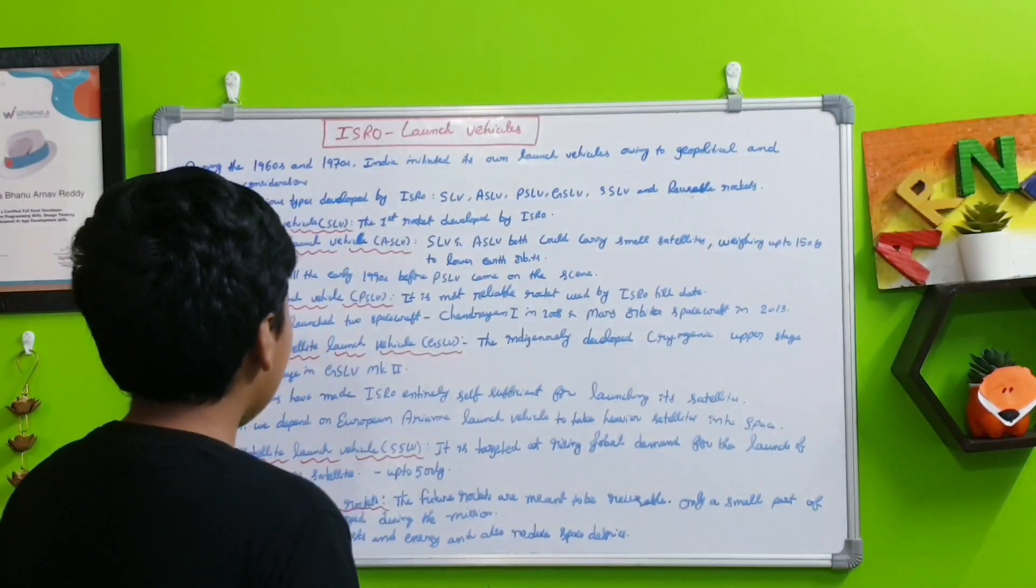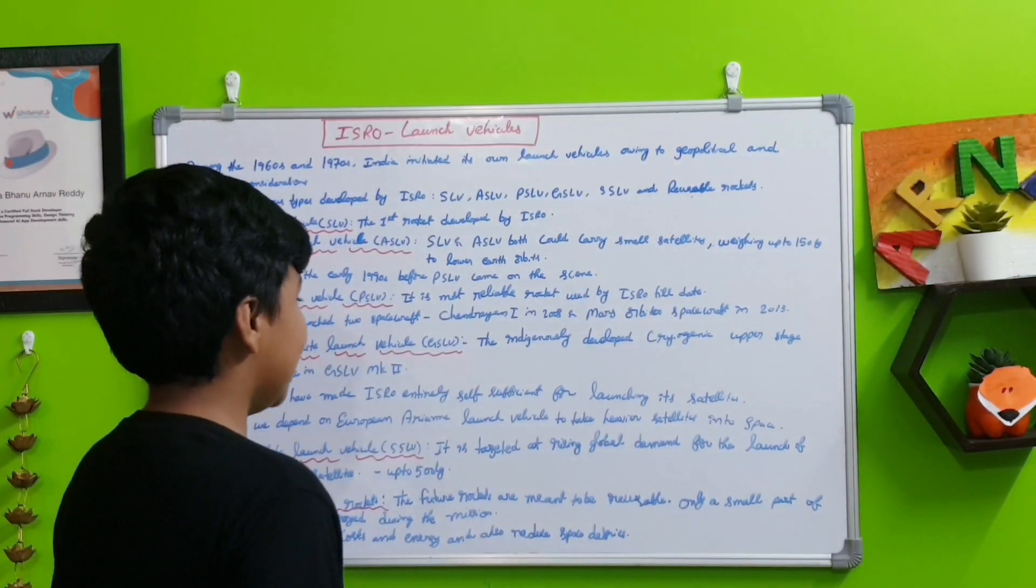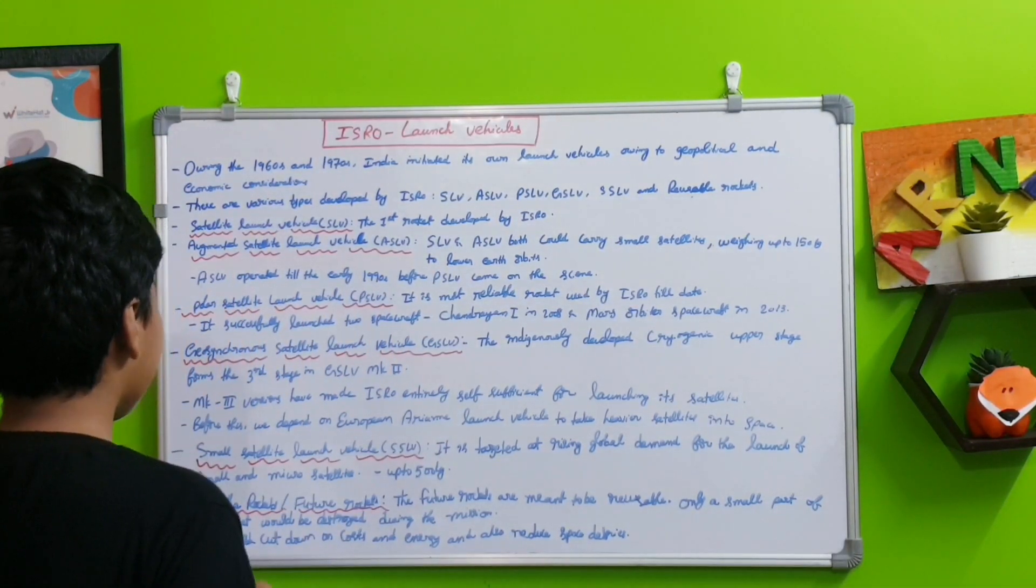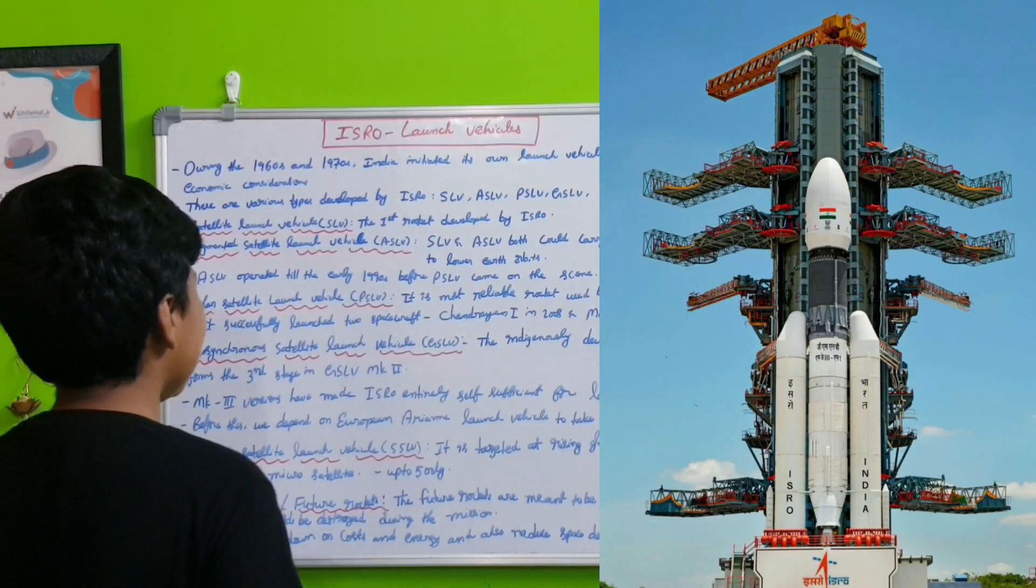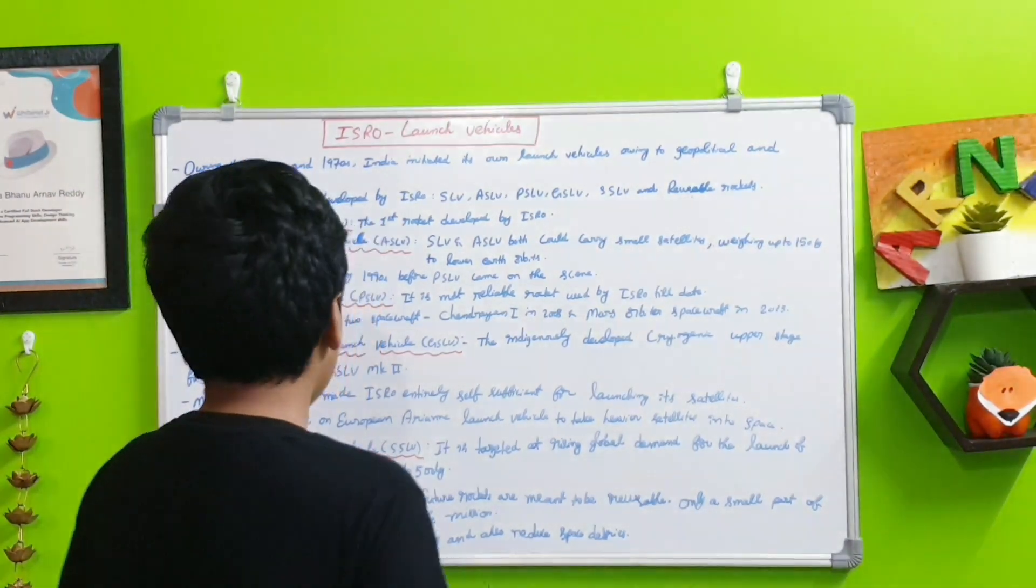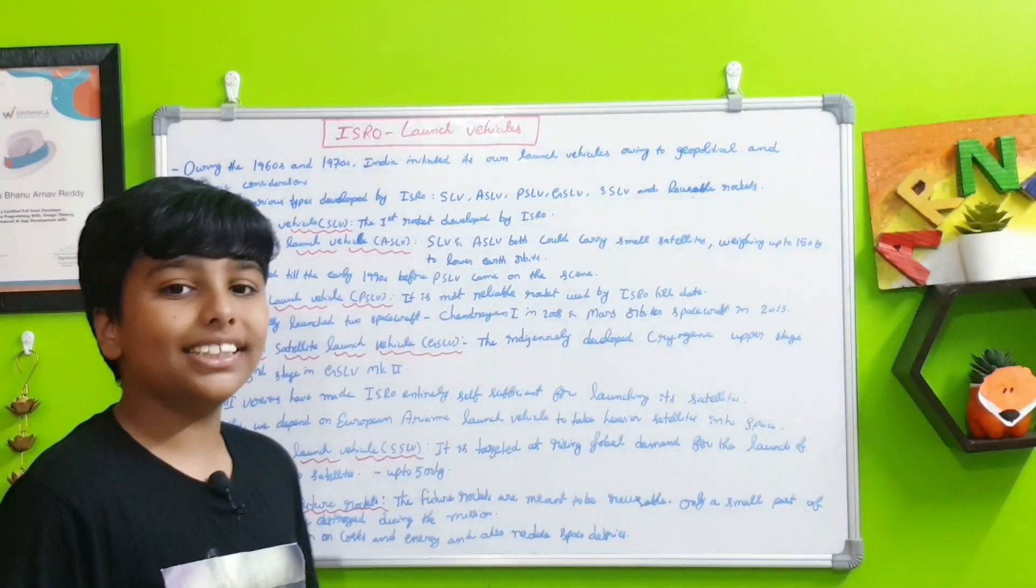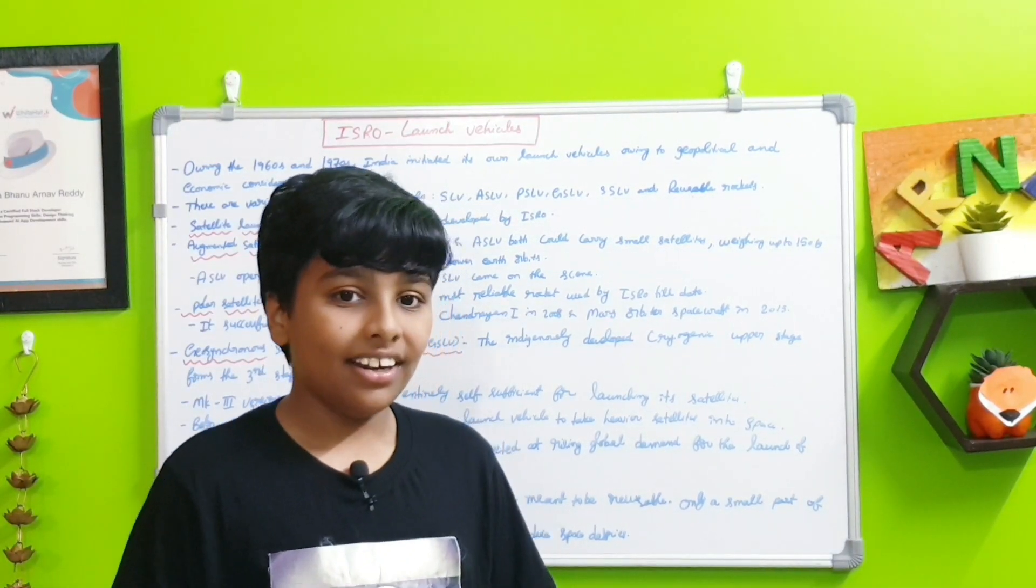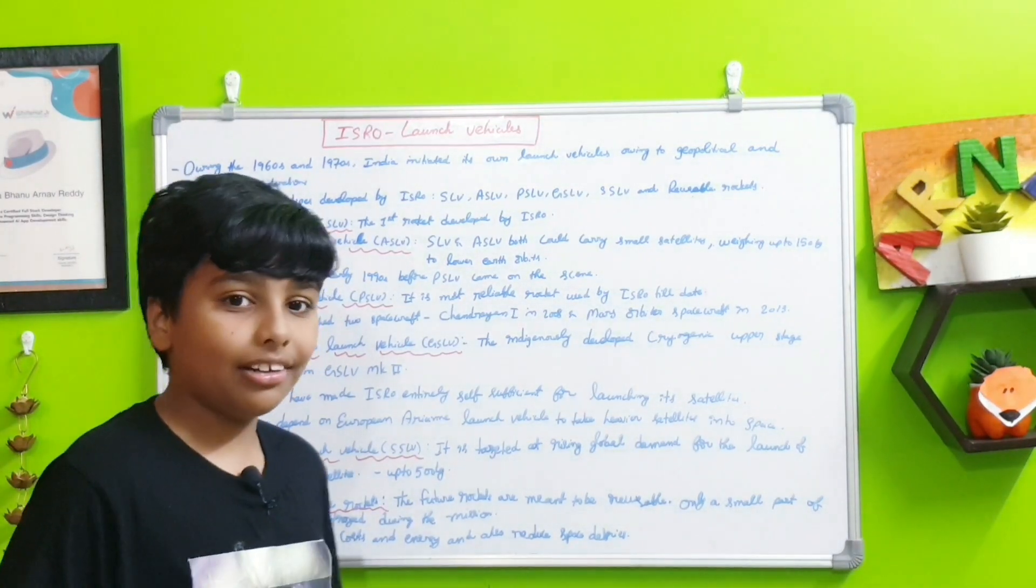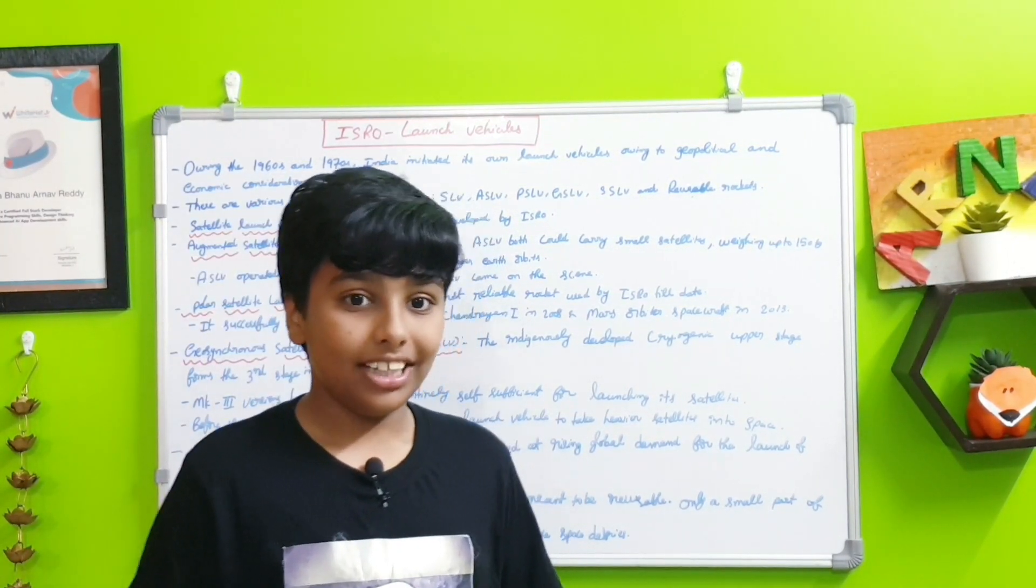Up to now there are two good designs in the GSLV: the MK2 and the MK3. Next, the MK3 versions have made ISRO entirely self-sufficient for launching its satellites. The MK3 version is the heaviest rocket in the whole of ISRO.